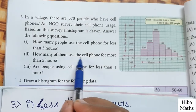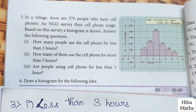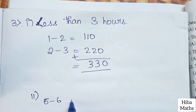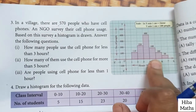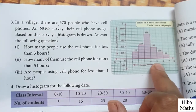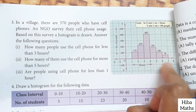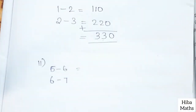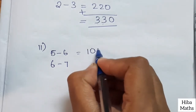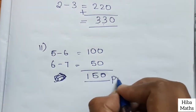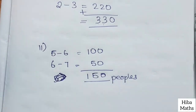Now second question: how many of them use the cell phone for more than 5 hours? Above 5, if you look at your book, 5 to 6 hours is 100, and 6 to 7 hours is 50. So total 150 people use cell phones above 5 hours.